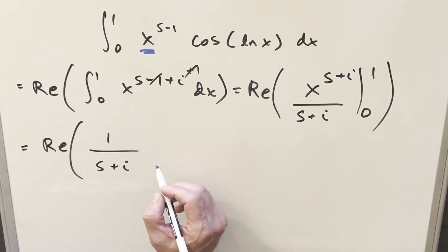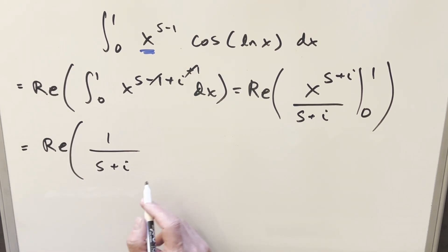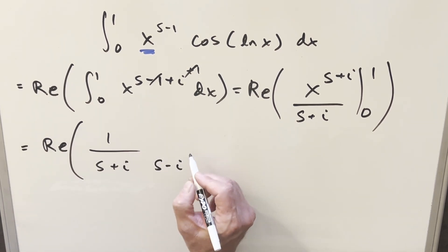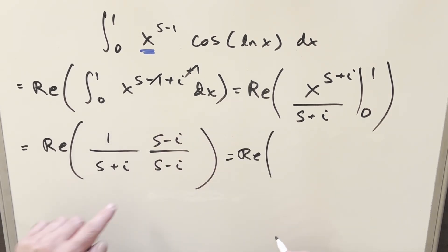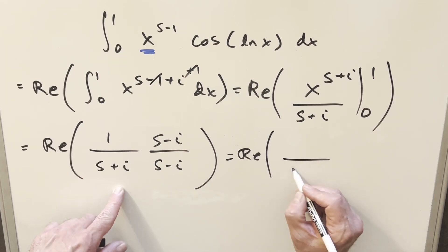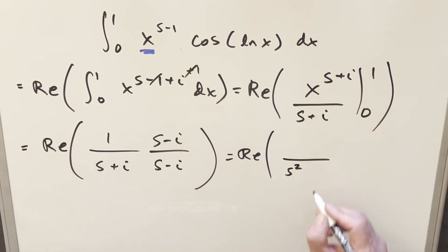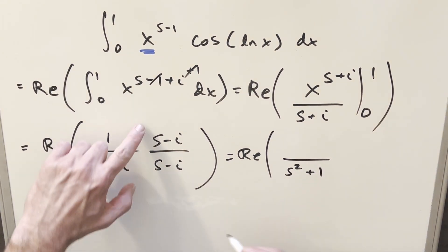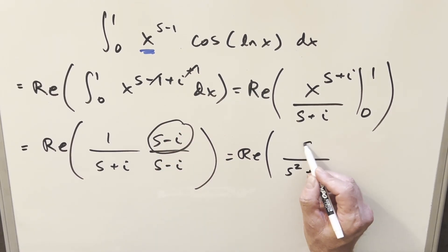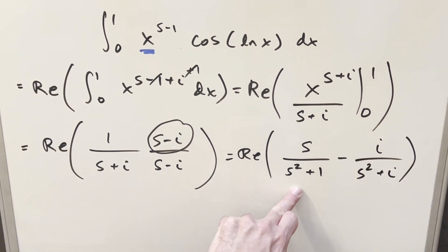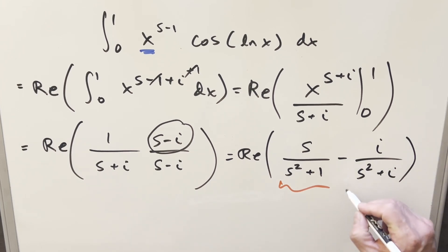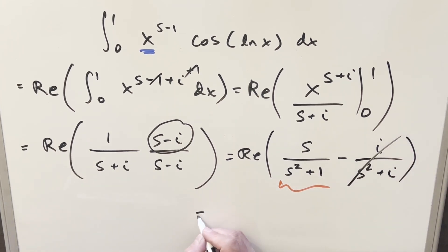Dealing with getting the real part when i is in the denominator isn't fun, but we can rationalize the denominator by multiplying by the conjugate. In the denominator we get s squared minus i squared; since i squared is minus 1, this becomes s squared plus 1. Splitting into two fractions, the first has s and the second has i in the numerator — the real part is clearly s over s squared plus 1.